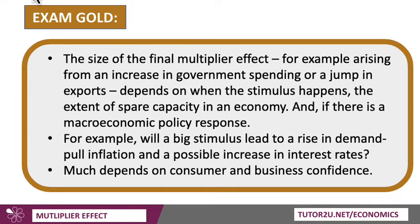The size of the final multiplier effect — let's say there's a big rise in government spending or a significant increase in exports — depends on when the stimulus happens, as well as the size of the stimulus. It also depends on the extent of spare capacity in the economy, and also, critically, if it leads to a macroeconomic policy response. For example, a big fiscal stimulus and a big rise in government spending might lead to an increase in demand-pull inflation, causing a central bank to increase interest rates, which would again dampen the size of the multiplier effect.